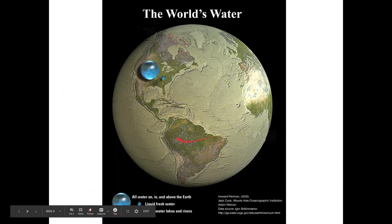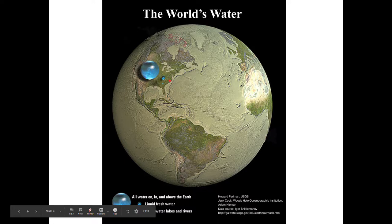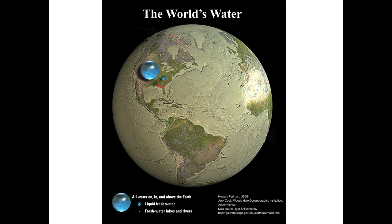Here I've shown a similar image from last lecture. We've got all the water in the atmosphere, all the liquid fresh water on the planet, and then the water in lakes and rivers. There's not a whole lot of fresh water on the planet - it's a very finite resource.